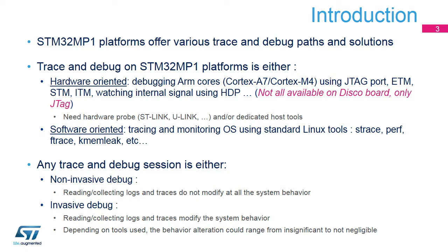The software path allows the benefits of the Linux trace and debug environment and tool suite. Some of the tools are embedded in the Linux kernel — for example, strace, perf, ftrace, kmemleak — not necessarily enabled by default. Some others, interfacing at user space level, can be integrated from outside.